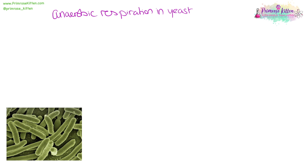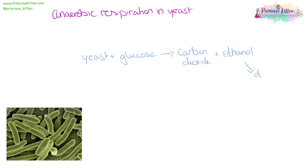Anaerobic respiration can also take place in yeast. Yeast will take the glucose and convert it into carbon dioxide and ethanol. Ethanol is used in drinks and cleaning products. Carbon dioxide is used for a variety of things, but in the context of yeast, it is what's going to make your cakes or your bread rise.